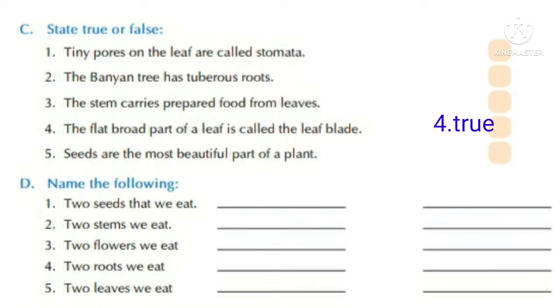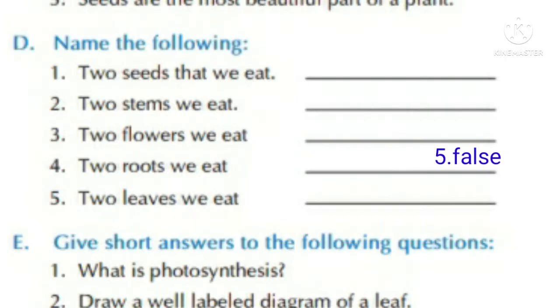Number four: the flat broad part of a leaf is called the leaf blade — True. Number five: seeds are the most beautiful part of a plant — False.